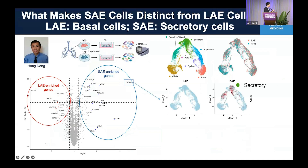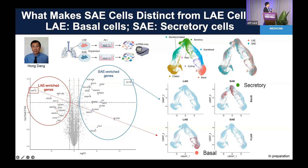When we look at surfactant protein B, it is really enriched in small airways. In single-cell RNA sequencing, we identified surfactant protein B as exclusively expressed in the small airway cell cultures, enriched in the secretory cell population here. This is a UMAP of our large and small airway cell cultures, and surfactant protein B is enriched in secretory cells. In contrast, keratin 14 is expressed in large airway cultures and enriched in the basal cells.